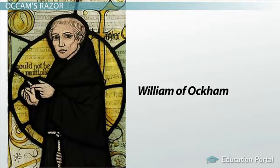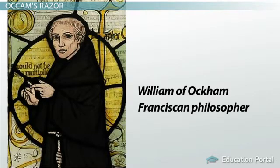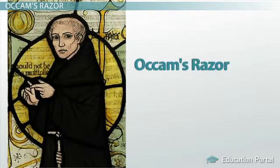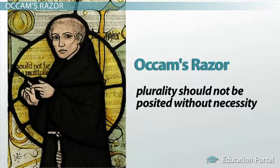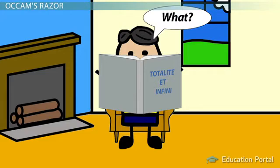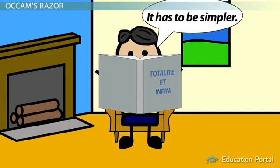William of Occam — also spelled with two C's instead of a K — was a Franciscan philosopher who was born in 1285. He was famous for Occam's Razor, a philosophical principle that in its original form states: 'plurality should not be posited without necessity.' That definition is one reason why historical philosophical writing, or at least its translations, can make things sound more complicated than they need to be.